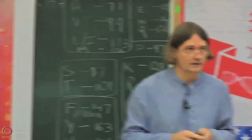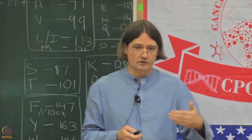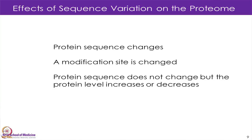What are the effects that we see from these genomic changes? The protein sequence can change, as we looked at in the two examples. We can also have the modification site changing. We can also have mutations that do not change the protein sequence, but change its level — either you get more of the protein or less. Similarly, mutations can lead to both increasing and decreasing modifications.